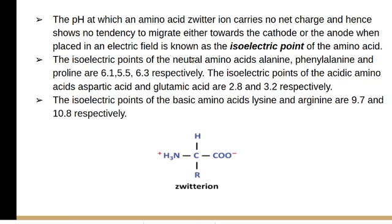Let us define isoelectric point: it is the pH at which an amino acid in zwitterion form carries no net charge and hence shows no tendency to migrate either towards the cathode or the anode when placed in an electric field. Amino acid can exist in a zwitterion form, and at a particular pH it shows no migration either towards cathode or anode.